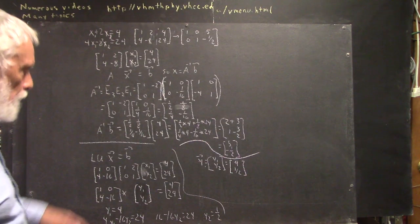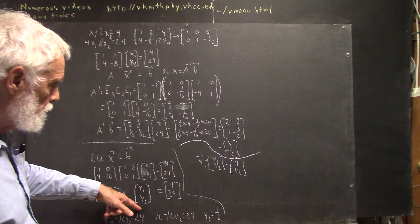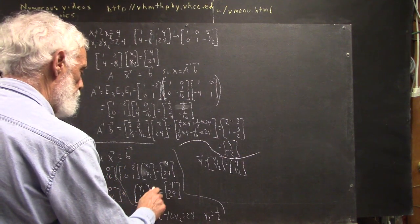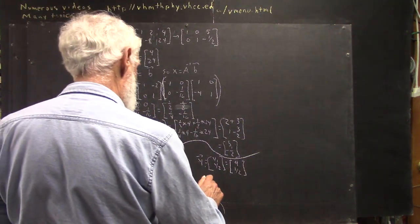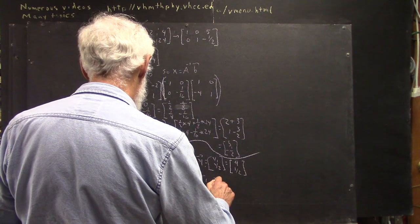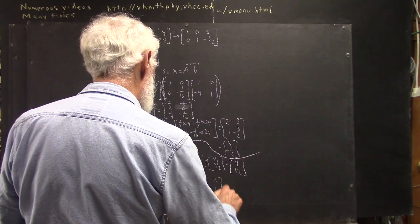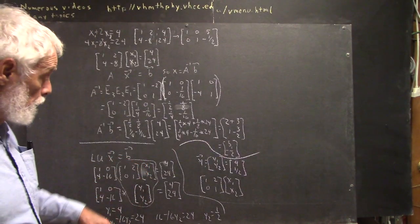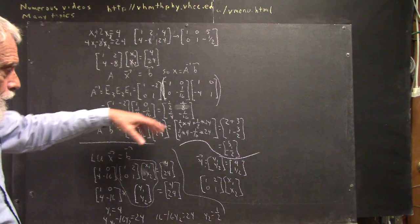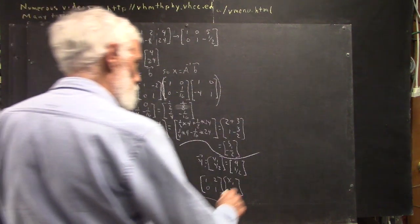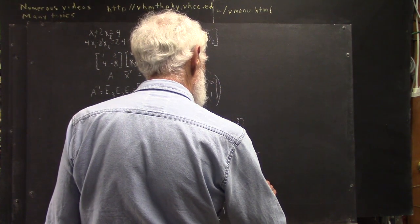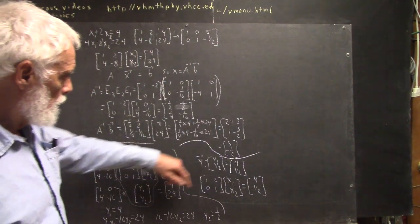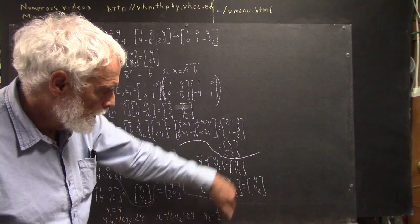Now, what good does that do me? Well, Y1, Y2 is what I use to replace this. So that this equals this gives us the equation 1, 2, 0, 1 times X1, X2. And it's X1, X2 that we're really trying to solve for. Again, Y1, Y2 is just kind of a dummy variable that we don't need anymore after we've used it. So it's just an intermediate step to solving this equation, which would give us X1, X2.